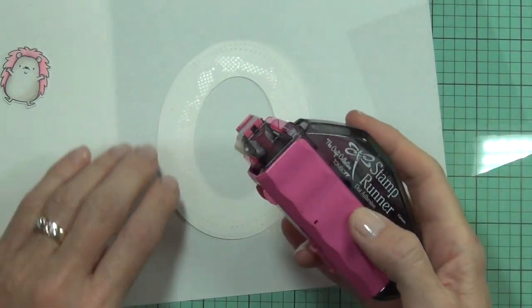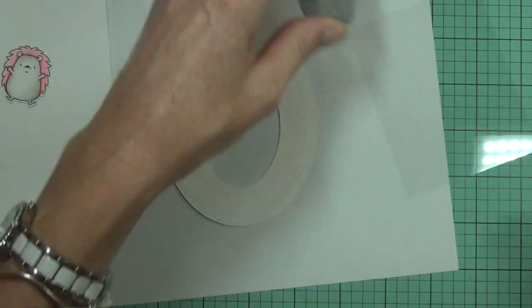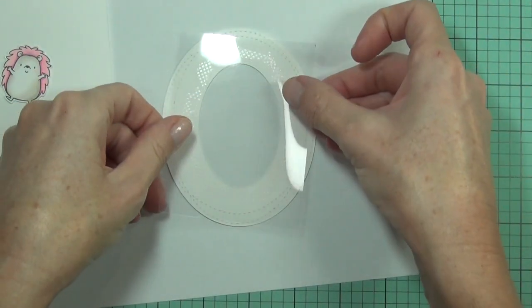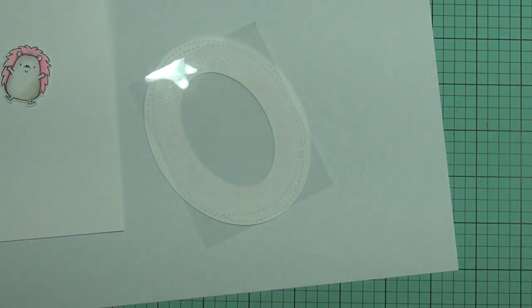So I always start my shaker window by adding the acetate behind the front panel first, because I've actually made shaker cards and forgot to add this and had to pull them apart and do it all later. So I've gotten the habit of doing that now.